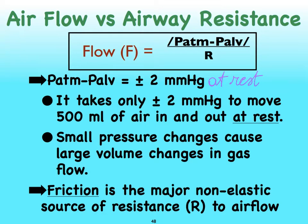If we decrease the pressure in the alveoli by about one millimeter of mercury compared to the atmospheric pressure, we're going to bring in about a half a liter of air. And when we expel air during exhalation, we only need to increase the pressure by about one millimeter of mercury above atmospheric pressure. So very small pressure changes allow us to move quite a bit of air — about half a liter when we inhale and about half a liter when we exhale.